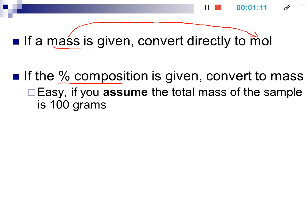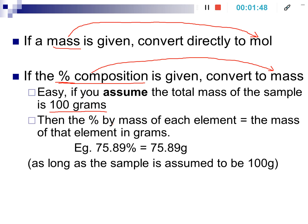If the percent composition is given instead, first we're going to convert from percent to mass, and then we do our mass to moles — so it's just one more step. It's easy to convert a percent into mass. You just have to pick a given quantity and decide how much of each element you'd have in mass. The easiest way is to assume you're dealing with 100 grams of the sample, just to make the math easier.